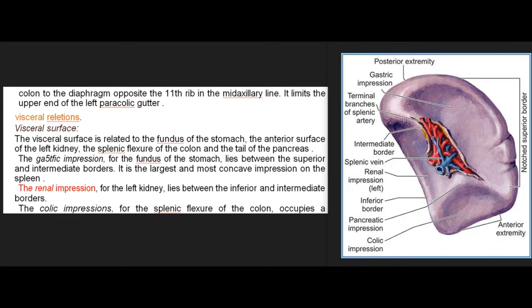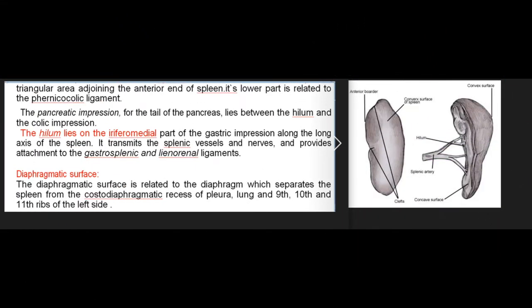Visceral surface relations: the visceral surface is related to the fundus of the stomach, the anterior surface of the left kidney, the splenic flexure of the colon, and the tail of the pancreas. The gastric impression for the fundus of the stomach lies between the superior and intermediate borders — the largest and most concave impression. The renal impression lies between the inferior and intermediate borders. The colic impression occupies a triangular area adjoining the anterior end. The pancreatic impression lies between the hilum and the colic impression.